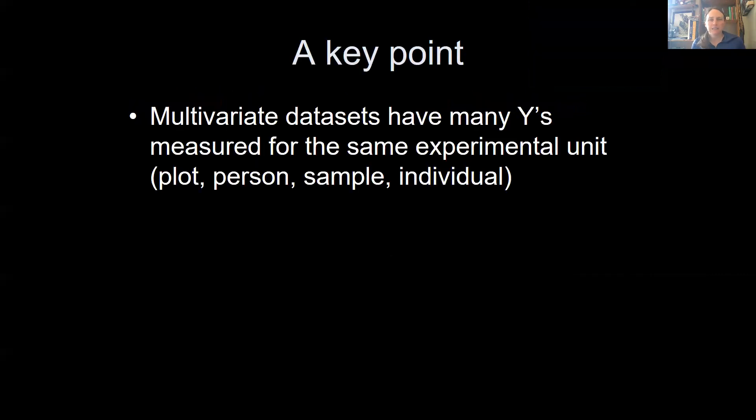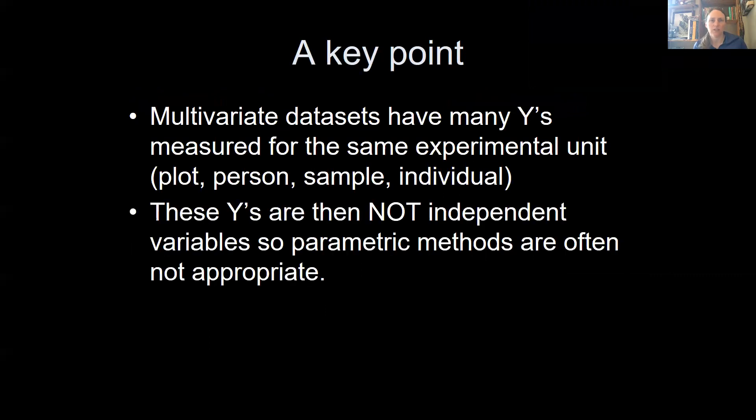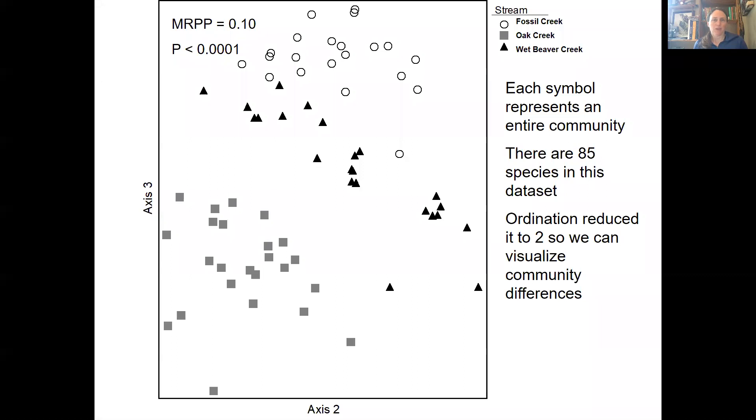So a key point: Multivariate data sets have many Ys measured for the same experimental unit. The Ys then are not necessarily independent variables. So we can't use parametric methods because most parametric statistics require independence.